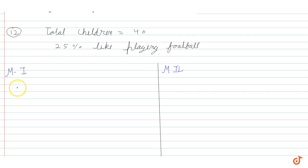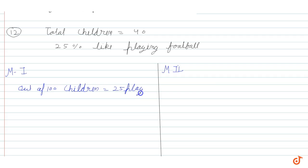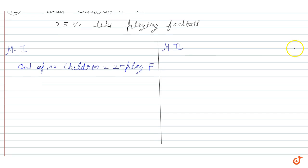In method one, if out of 100 children, 25 play football, then out of 40 children, how can we calculate? If we have 100 children, we have 25 children who play football.